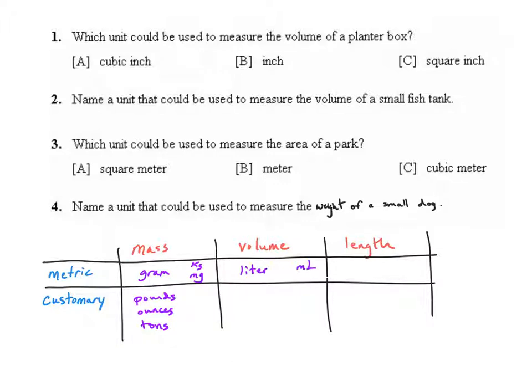In the customary system we usually use measurements of capacity which are the gallon, quart, pint, cup, and then other things like tablespoons and teaspoons.